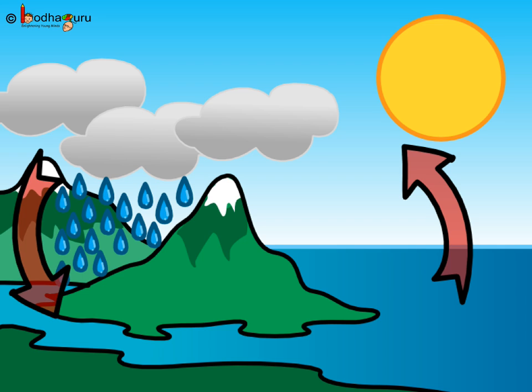That was the tireless journey which water continues to make endlessly. This is called the water cycle. The water cycle is the journey water takes as it circulates from the land to the sky and back again to the land.